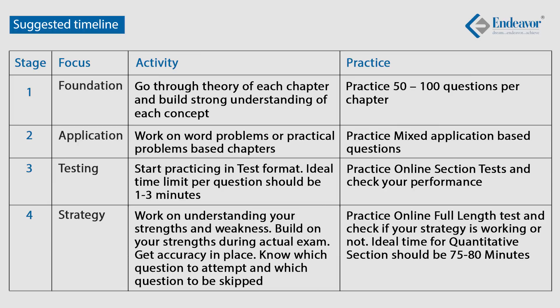Since there are no sectional cutoffs and no sectional time limits, you have complete freedom to select any question or section. Many students waste this freedom, but those who know their strengths and weaknesses can capitalize on it. For example, if you are not strong in quantitative aptitude, you only need around 35 to 40 correct questions to score decent marks, and the remaining can be balanced from the verbal section — and vice versa. This strategy is the fourth and final stage: developing the correct exam-day strategy. If you follow these four stages of preparation, you will have the right strategy in place and be able to make wise decisions on the day of exam.